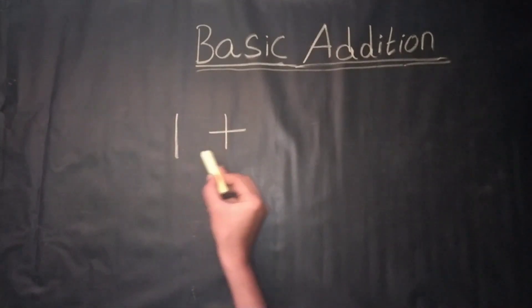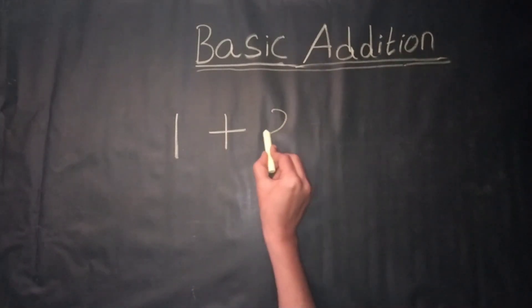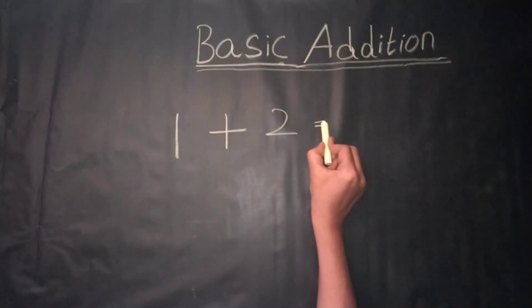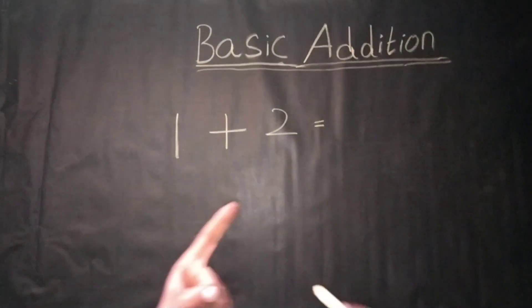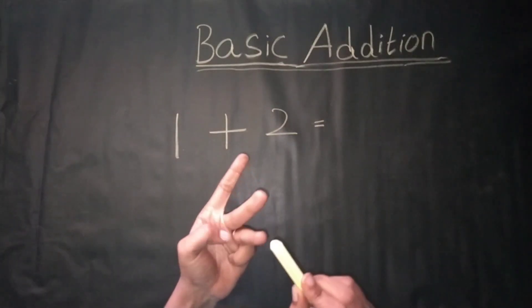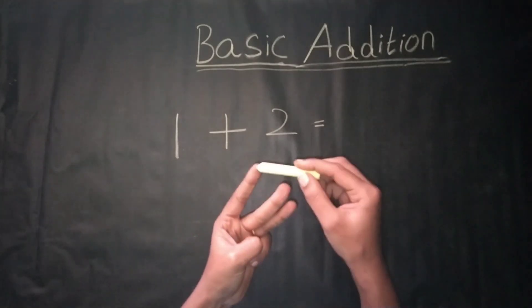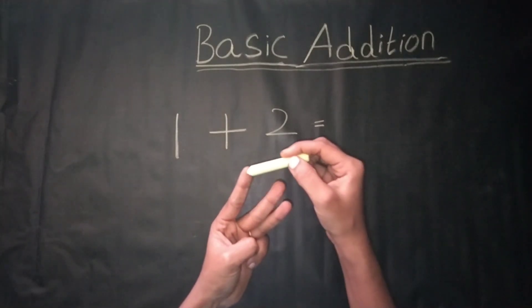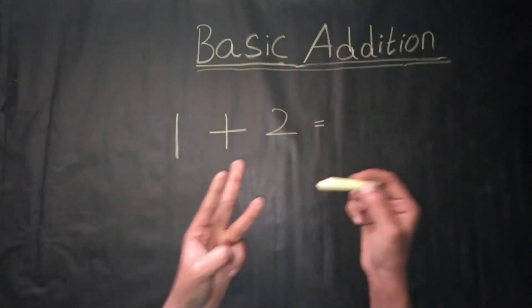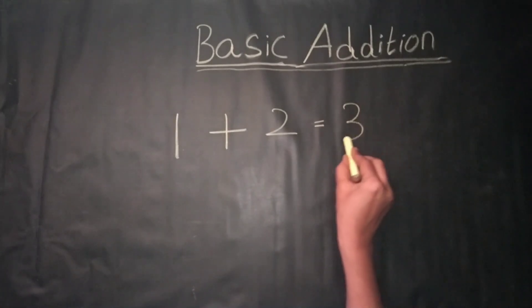1 plus 2 is equal to — counting by fingers, 1 plus 2, count together: 1, 2, 3. We get the answer: 3.